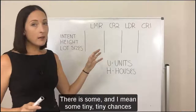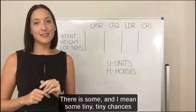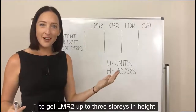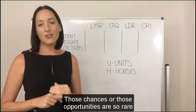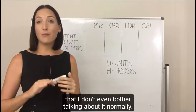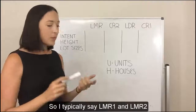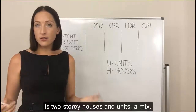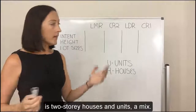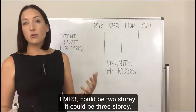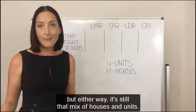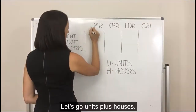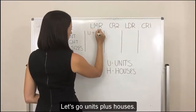There are some tiny, tiny chances to get LMR 2 up to three storeys in height, but those opportunities are so rare that I don't even bother talking about it normally. So I typically say LMR 1 and LMR 2 is two-storey houses and units — a mix. LMR 3 could be two storey or three storey, but either way it's still that mix of houses and units.